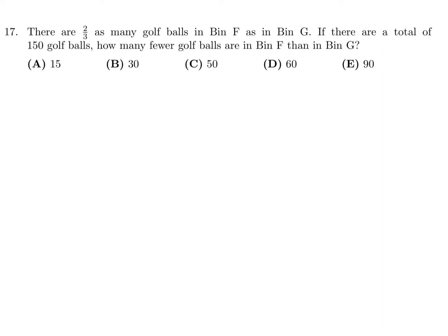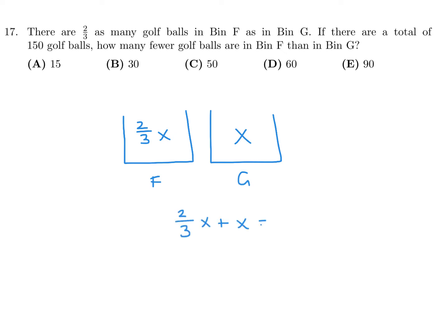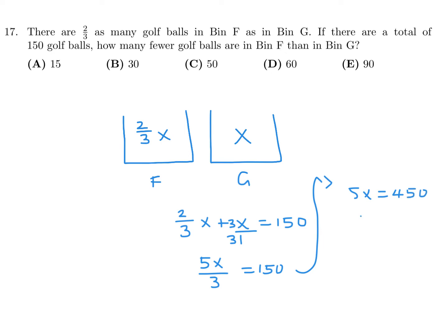There are 2 thirds as many golf balls in bin F as in bin G. If there are 150 total, how many fewer are in bin F than bin G? Let G equal X and F equal 2 thirds X. Then X plus 2 thirds X equals 150, giving 5X over 3 equals 150, so 5X equals 450 and X equals 90. Therefore F equals 60. The difference is 90 minus 60, which is 30. The answer is B for number 17.